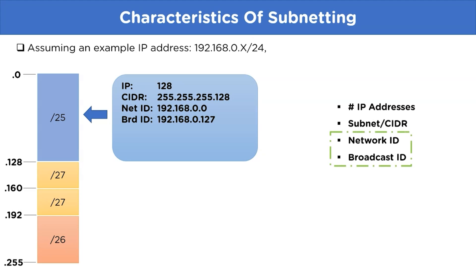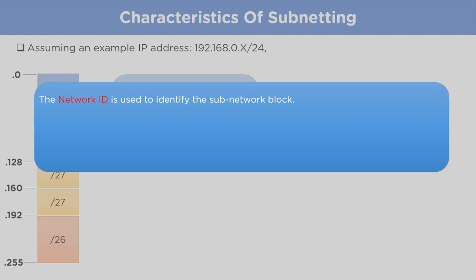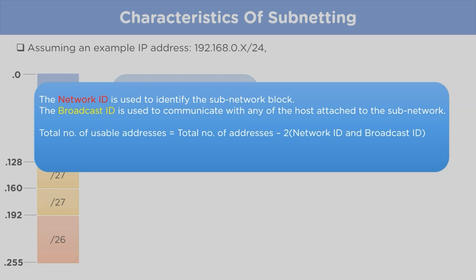The network ID and broadcast ID addresses cannot be assigned to any network device. The network ID is used to identify the subnetwork block, while the broadcast ID is used to communicate with any host connected to the subnetwork block. Therefore the total number of usable IP addresses equals total addresses minus 2 — that is 128 minus 2 equals 126 usable IP addresses.